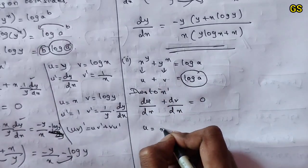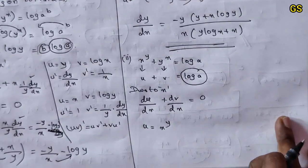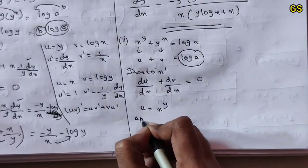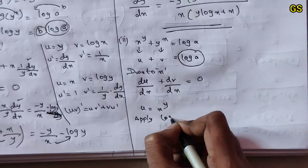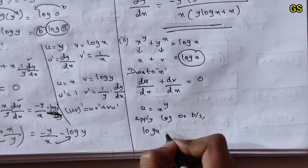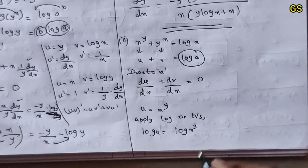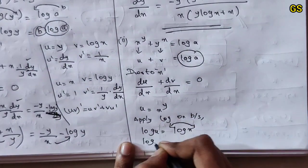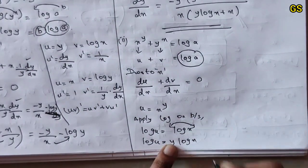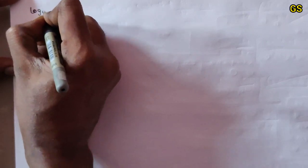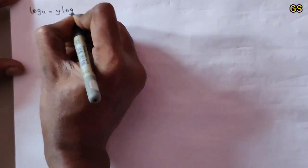Let u equal to x power y. Find du/dx. Since this is a power variable, apply log on both sides: log u equals log of x power y. Using the log property, the power comes to the front: log u equals y into log x. Now differentiate with respect to x.